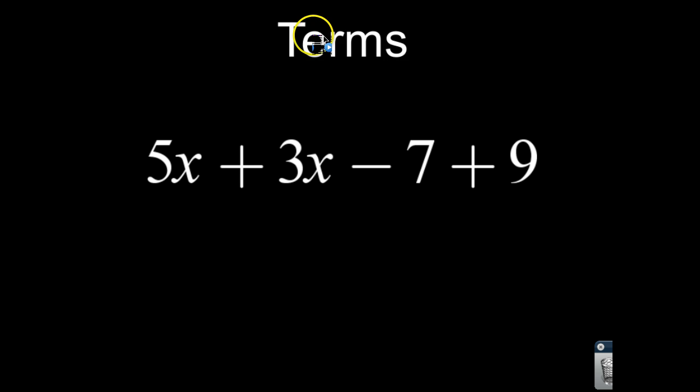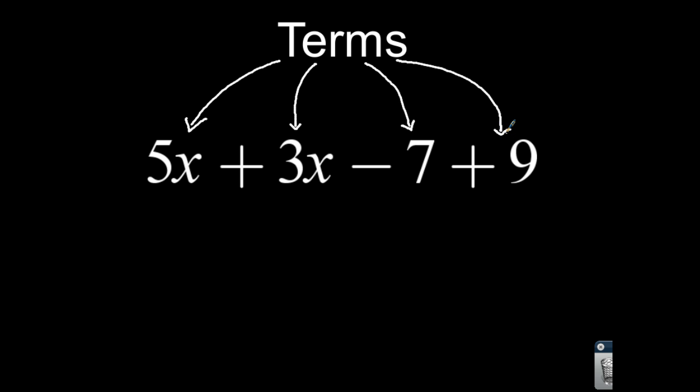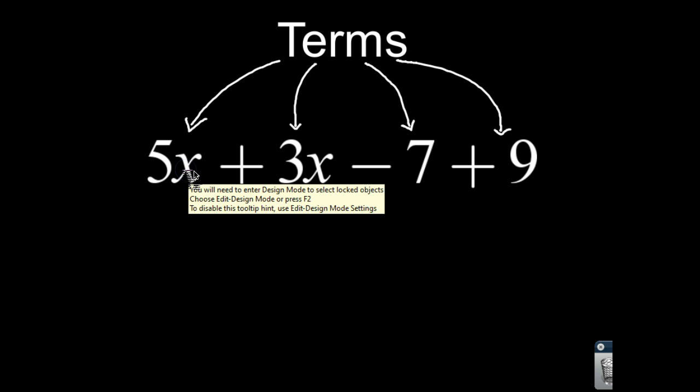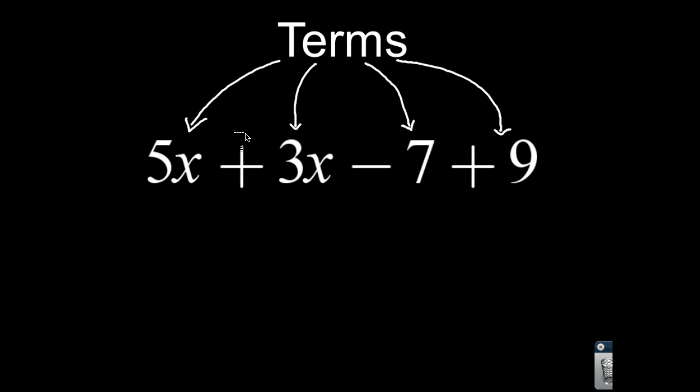First, let's identify some of these things. Where are my terms? The terms are going to be each and every one of these parts — each of these is a term. What's important to understand, and this is the part where students often get confused, is that these terms are all going to be identified as either positive or negative. So the first thing we look at: this 5x here is going to be a positive 5x — it's going up. Then we're adding a positive 3x.